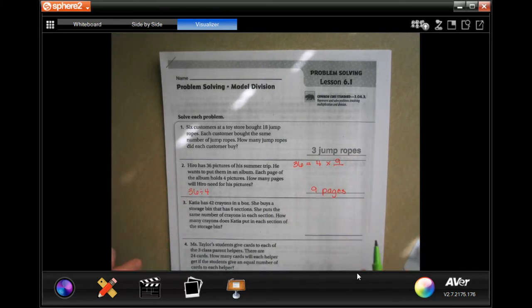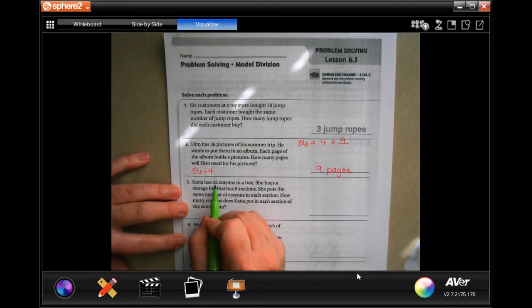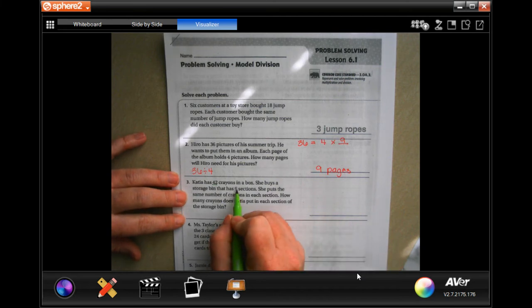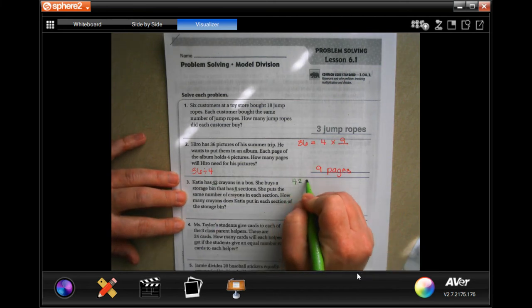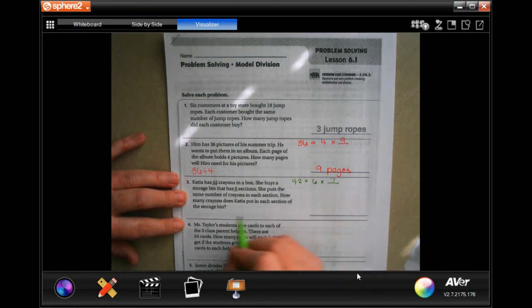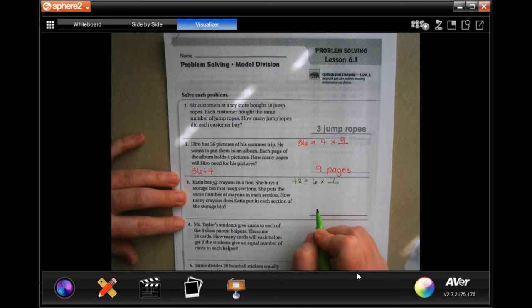On this one, Katia has 42 crayons in a box. She buys a storage bin that has six sections. So 42 equals 6 times what? We know 6 times 7 is 42, so how many crayons in each section? Seven crayons.